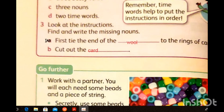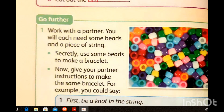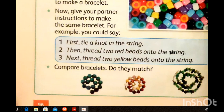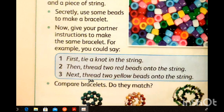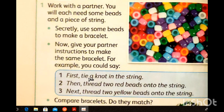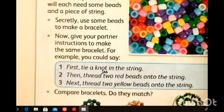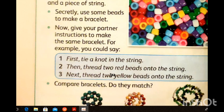Now, Year Two, look at the instruction. Find and write the missing nouns. 'First tie the end of the...' — of the wool. 'To the rings of the card.' 'Cut out the...' — the card. Now work with your partner. We have beads — many colorful beads: pink, white, black, blue, purple. You will use a piece of string to make a bracelet. Girls like to wear a bracelet around their hands. First tie a knot in the string. Then thread two red beads on the string. Next thread two yellow beads on the string. Now compare your bracelet and choose the most beautiful one.